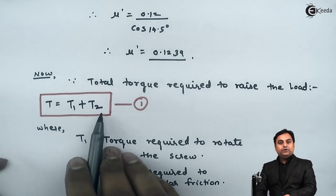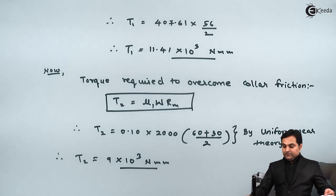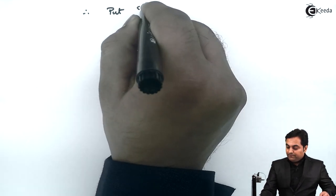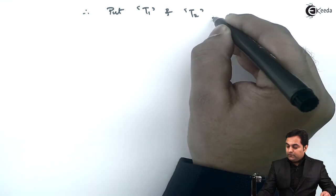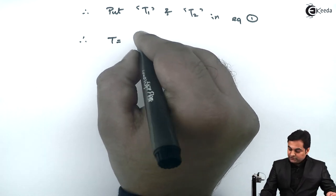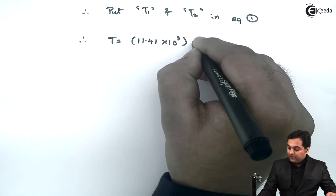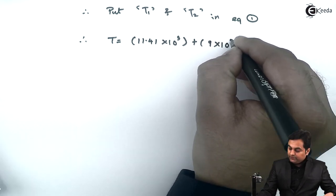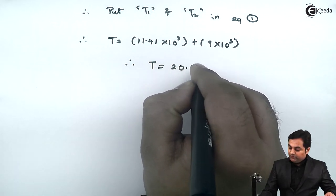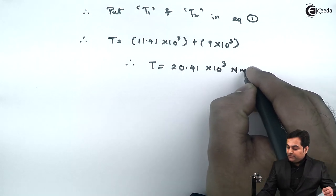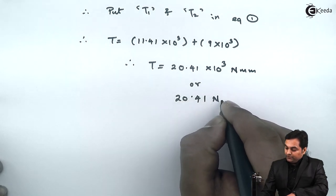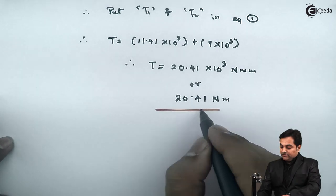Putting T1 and T2 into equation 1, total torque T = T1 + T2 = 11.41 × 10³ + 9 × 10³ = 20.41 × 10³ Newton-mm, or 20.41 Newton-meter. This is our first answer.